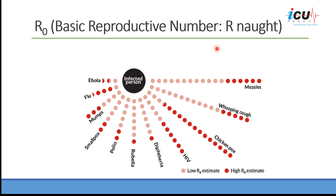Before we discuss the results of this study, it is important to understand what we mean by basic reproductive number, which is the R0. That number represents the number of cases that will get the disease after exposure to a single case in the community. So if we have a single case of COVID-19, what we know right now is that around 2.2 to 2.5 people will contract the disease from that single case.